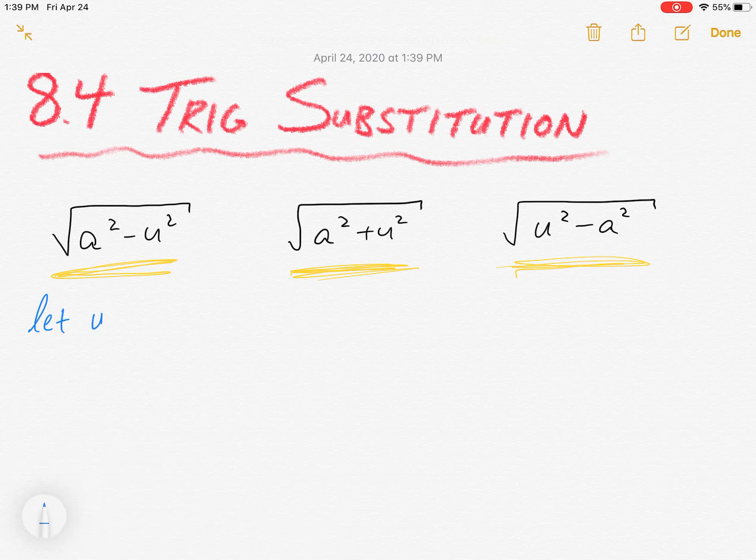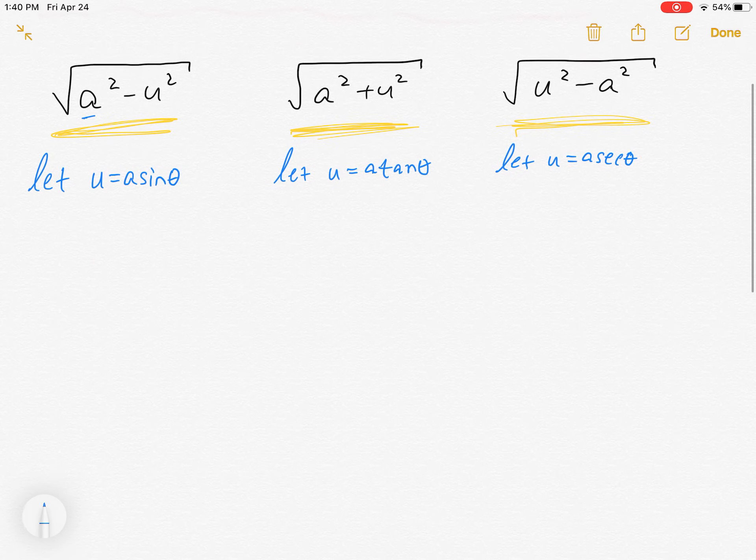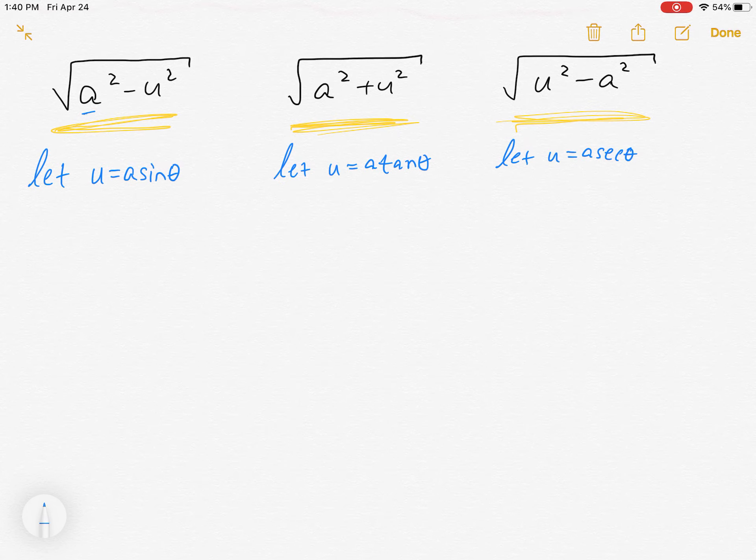The first one, if you see that, you're going to let u be a sine theta. That's the substitution you're going to do every time. If you have this one, you're going to let u be a tangent theta. If you have this one, you're going to let u be a secant theta. And that is kind of the driving force this entire section.